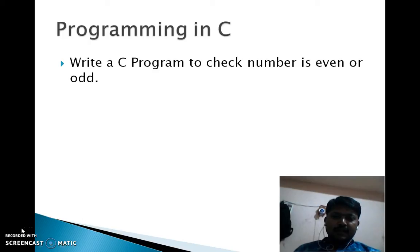If the remainder of number divided by 2 is 0 then number is even. If number is divided by 2 and remainder is non-zero then number is odd.